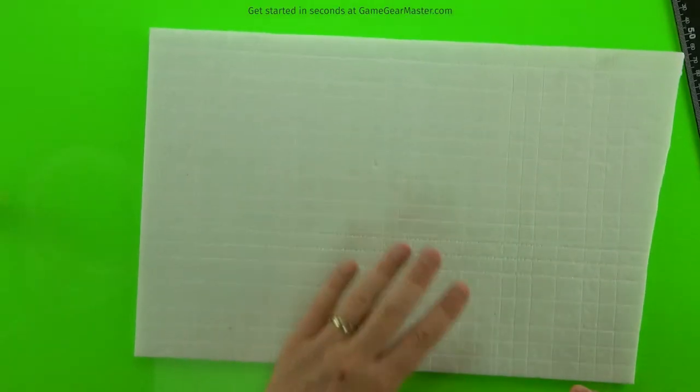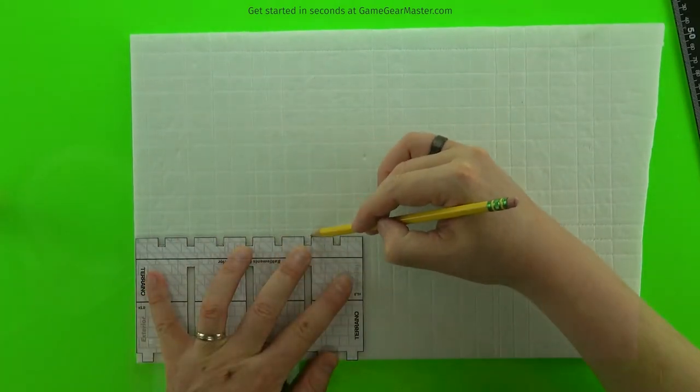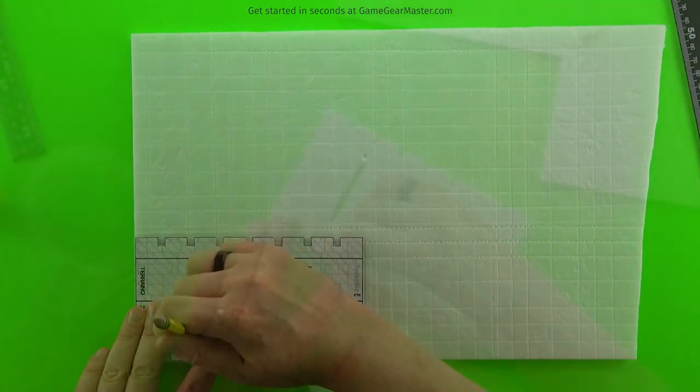We'll start by tracing on the crenellations template to a piece of pre-textured foam board and then just cut out the voids.